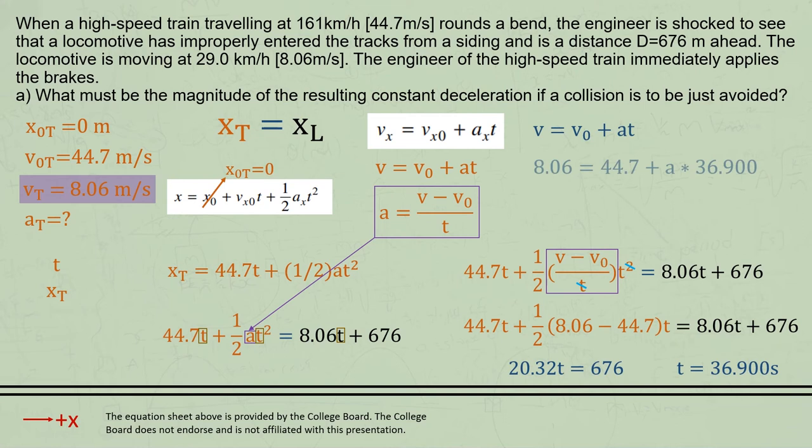Then finally, we just use the same equation, substitute in the value we just calculated for time, and solve it for acceleration. The answer is of course negative, because the train is decelerating. But because the original question asks for the magnitude of the deceleration, we should drop the negative.